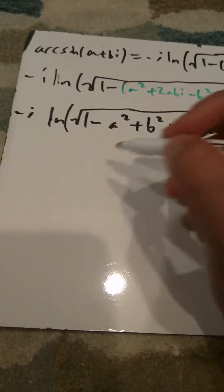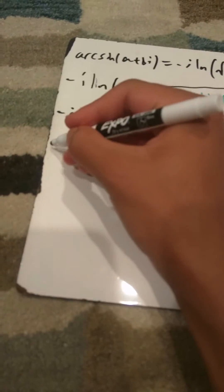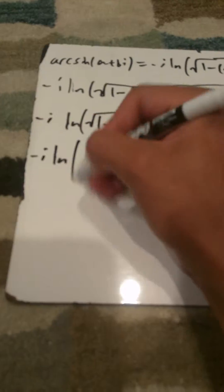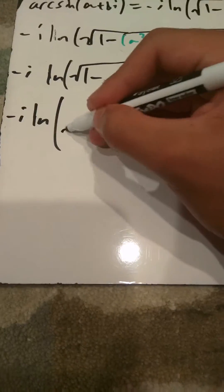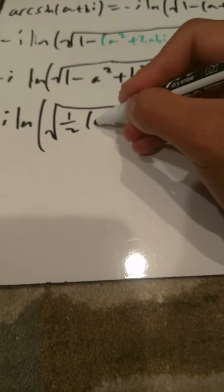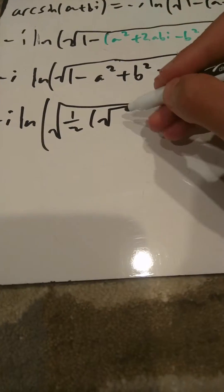And this equals — we have the square root of a complex number, and there's actually a formula for this. So this equals negative i times the ln of: to find the square root of a complex number, we take the square root of one half times the square root of the real part squared plus the imaginary part squared, plus the real part.